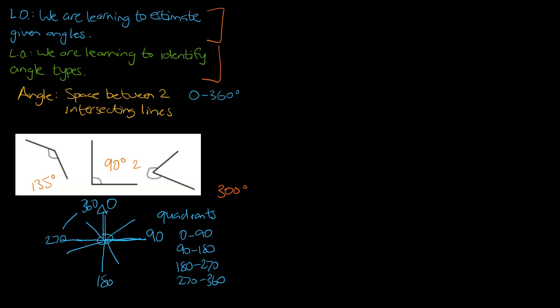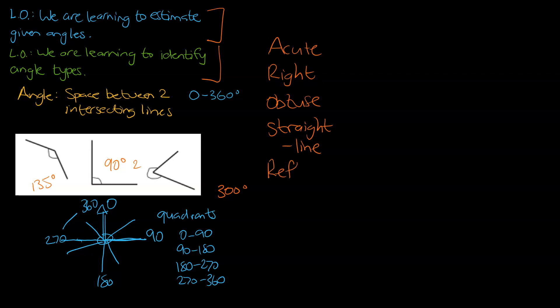Let's have a look at the second one, where we're learning to identify angle types. I'm going to write a bit of a list here. So angles could be acute, they could be right, they could be obtuse, they could be a straight line, they could be reflex, and finally they could be a full revolution.